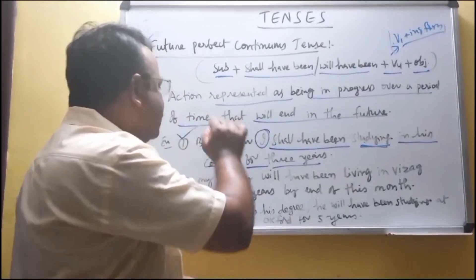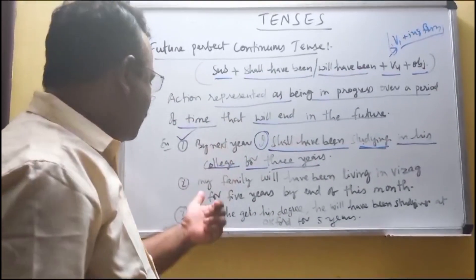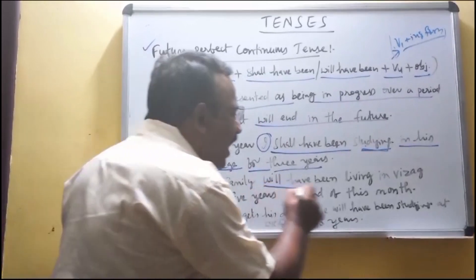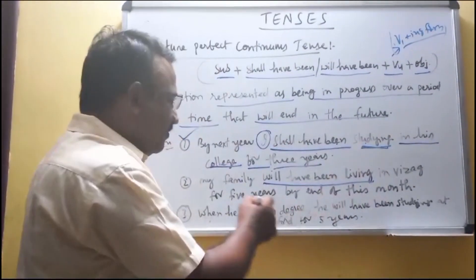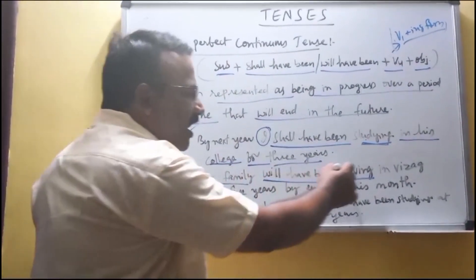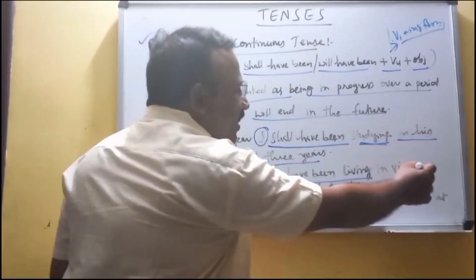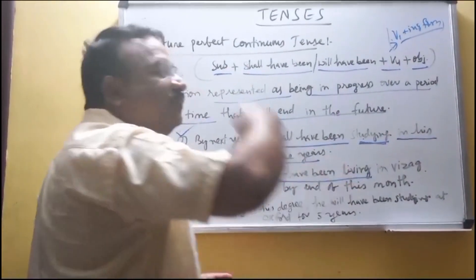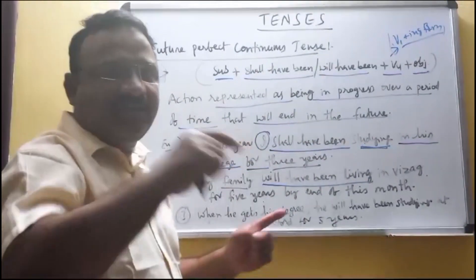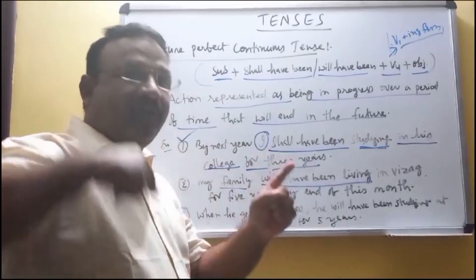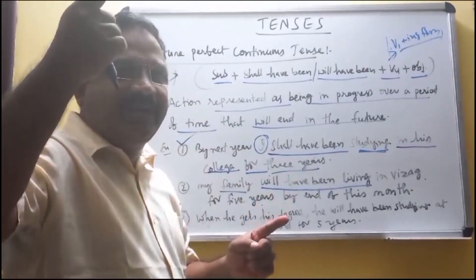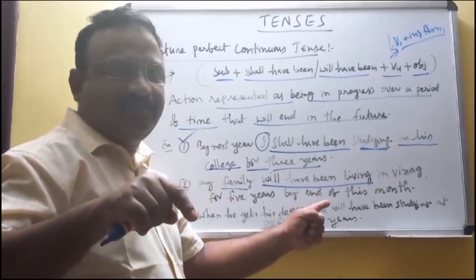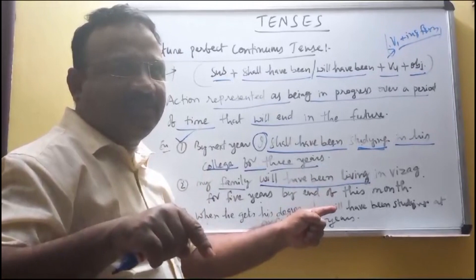Another example: 'My family will have been living in Vanitya for five years by the end of this month.' Here the action is not yet completed — it will be completed by the end of this month.